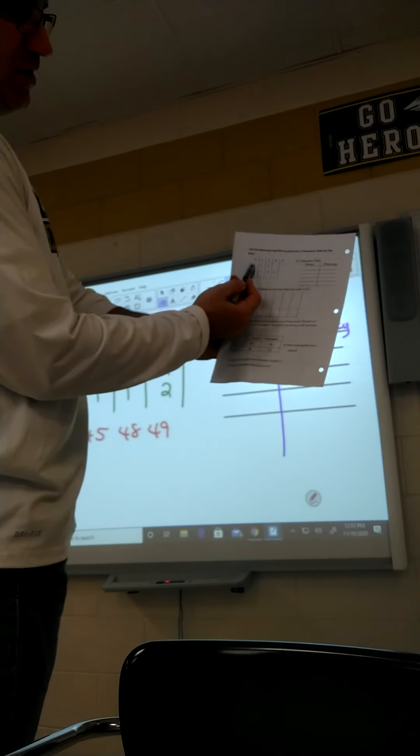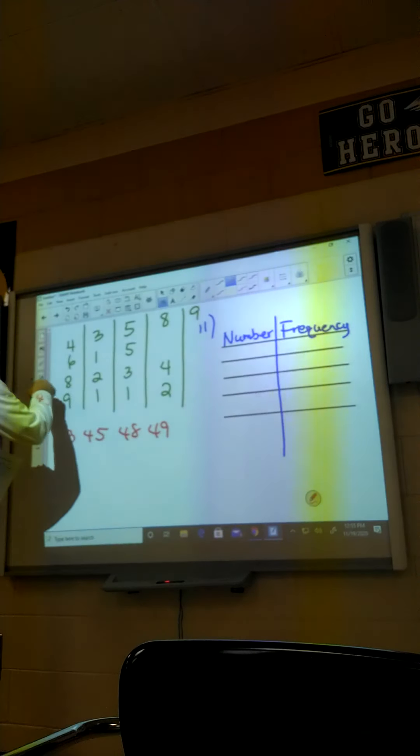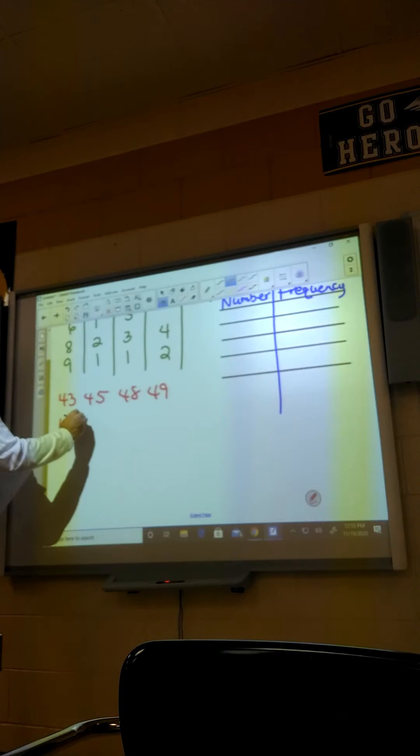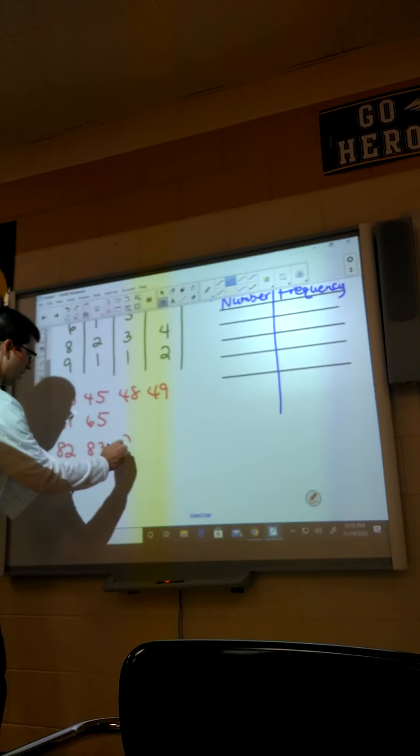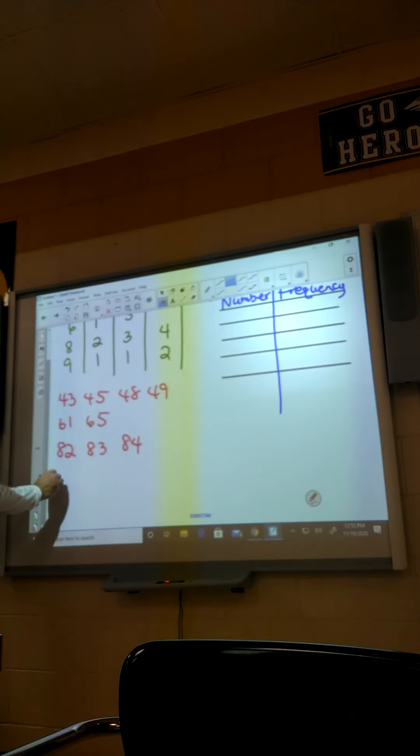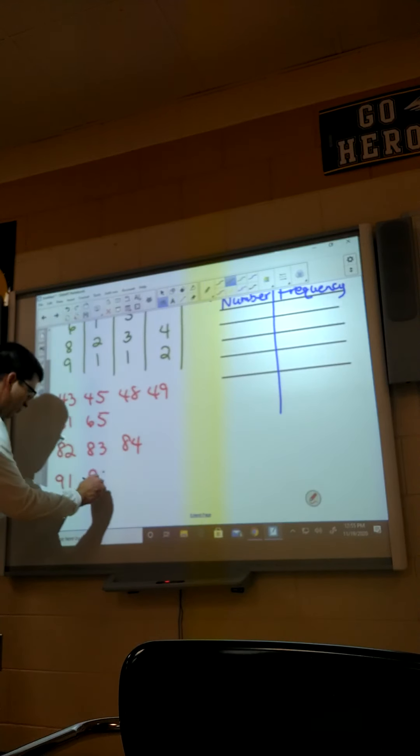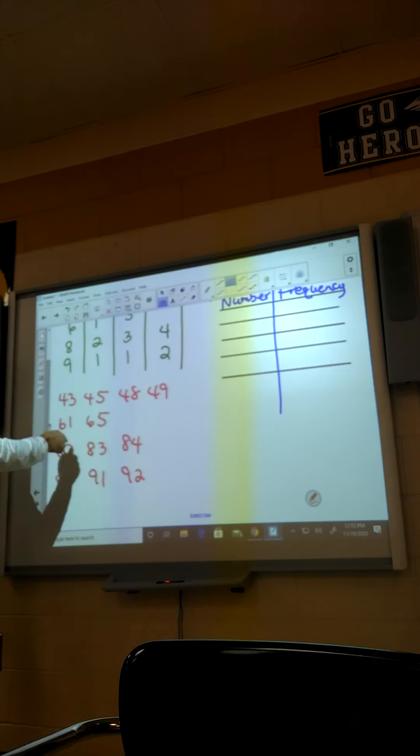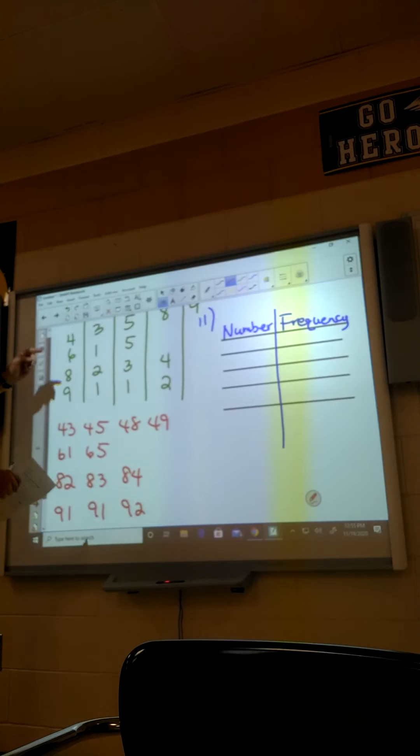Next row would be 61, 65. Next row would be 82, 83, and 84. Then 91, 91, and 92. One, two, three, four, five, six, seven, eight, nine, ten left. So we got 12 numbers. All right, so when you do your stem and leaf plot, you know basically you're starting at 40 and going to 90.